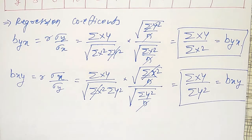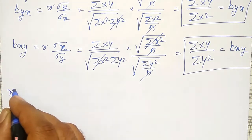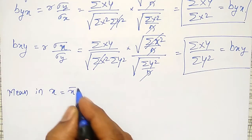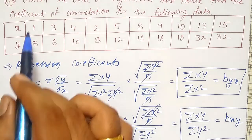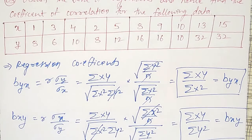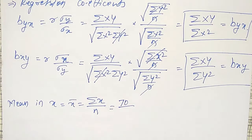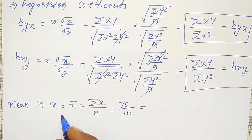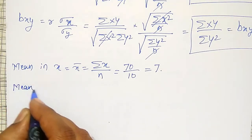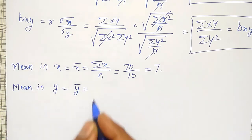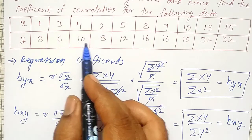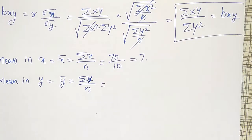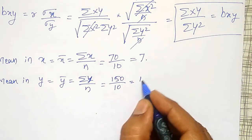Therefore, to find out these things, I want the means. Mean in x: x̄ equals summation small x divided by n. The sum of all values — 1, 3, 4, 2, 5, and so on — I am going to get as 70, and the number of observations is 10. Therefore, x̄ equals 7. Then mean in y: ȳ equals summation small y divided by n. Sum of all y values — 8, plus 6, plus 10, plus 8, and so on — I am going to get as 150. 150 divided by 10 is 15. So x̄ = 7 and ȳ = 15.